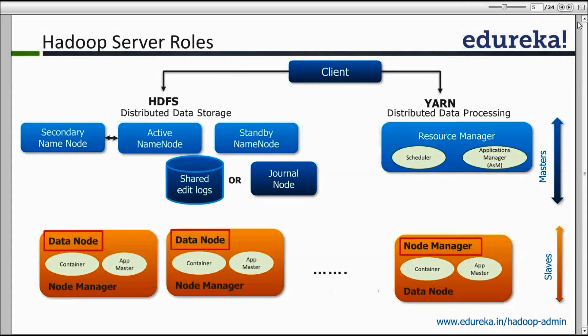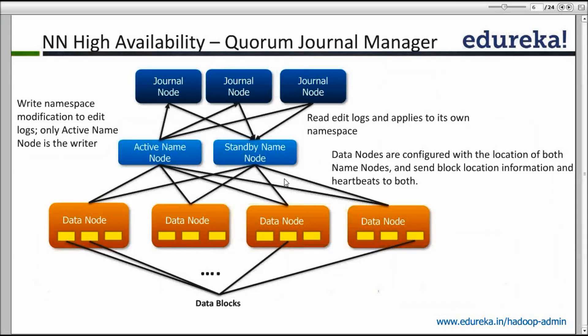Everybody is able to see Hadoop server roles slide number 5 now. Does it make sense? There is no secondary name node in HA — it is optional, as I mentioned last time. There is something I will tell you now with the QJM. With QJM, regarding the standby name node: for each and every namespace you are going to have an active name node and standby name node. At any point of time both name nodes are going to share the state through highly available edit logs — called shared edit log.